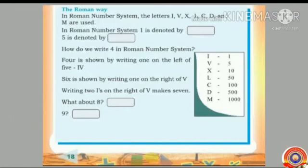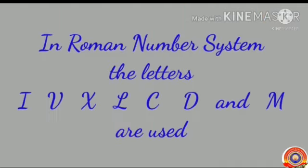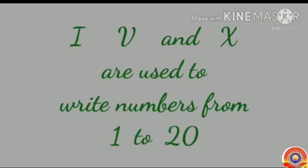Let's go to another activity: the Roman way. In the Roman number system, the letters I, V, X, L, C, D, and M are used. Three of the letters — I, V, and X — are used to write numbers from 1 to 20.